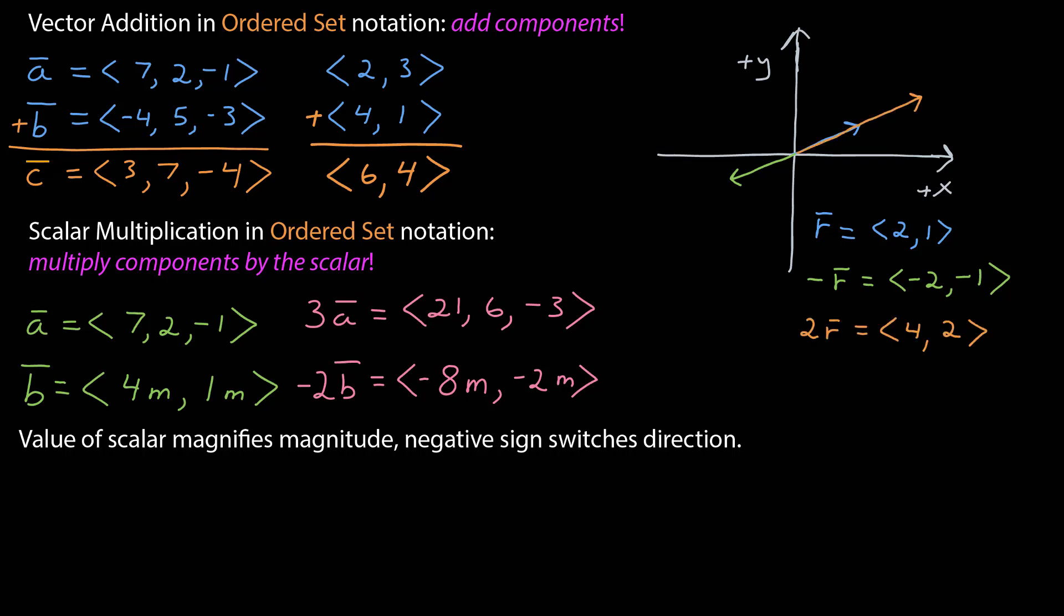If I have 2r, that's 4, 2, a vector twice as large pointing in the same direction as the original. Whereas negative 2r is a vector with a magnitude twice as large and pointing in the opposite direction.